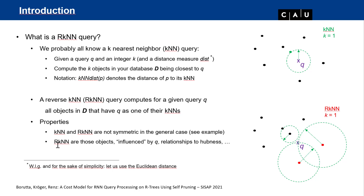Why should we be interested in reverse nearest neighbors? There are many concepts that rely on them. For example, influence sets: reverse nearest neighbors are those objects influenced by the query q. There is also a relationship to hotness, graphs, and similarity graphs. Reverse nearest neighbors are quite interesting to compute.